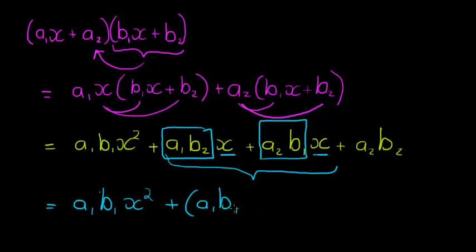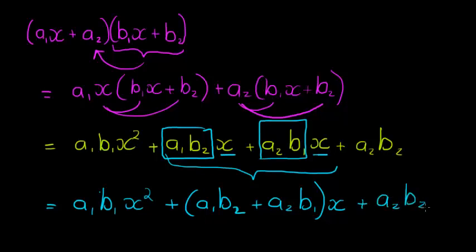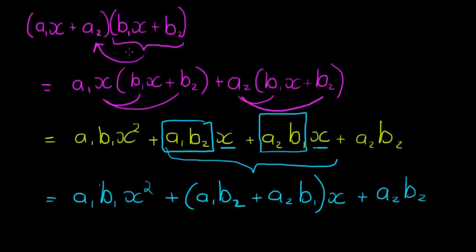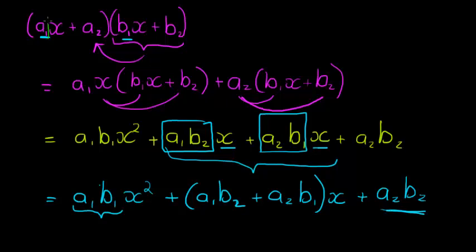So the result is A1B1 times X squared, plus A1B2 plus A2B1 times X, plus A2B2. This is quite a bit more complicated when I multiply out two brackets where the X term has a coefficient other than one. We find that what comes in front of the X squared — the coefficient of X squared — is the product of A1 and B1. And for the last term, it's also quite easy: that's just A2 times B2. So the X squared term is the product of the X coefficients, and the constant term at the back is just the product of the constant terms in the brackets.